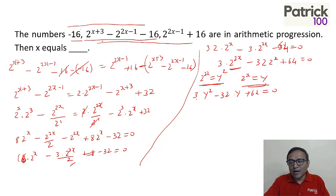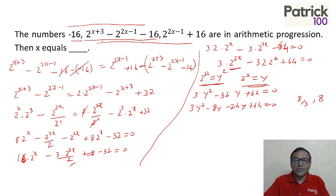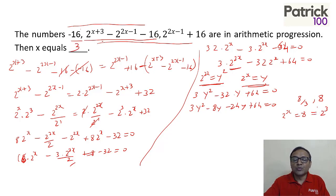3 times 64 is 192. Breaking it up as 8 and 24: 3y² minus 8y minus 24y plus 64 = 0. You get the roots as 8/3 and 8. Now y = 2^x must equal 8, so x becomes 3, because 2^x = 8 = 2³, therefore x = 3.